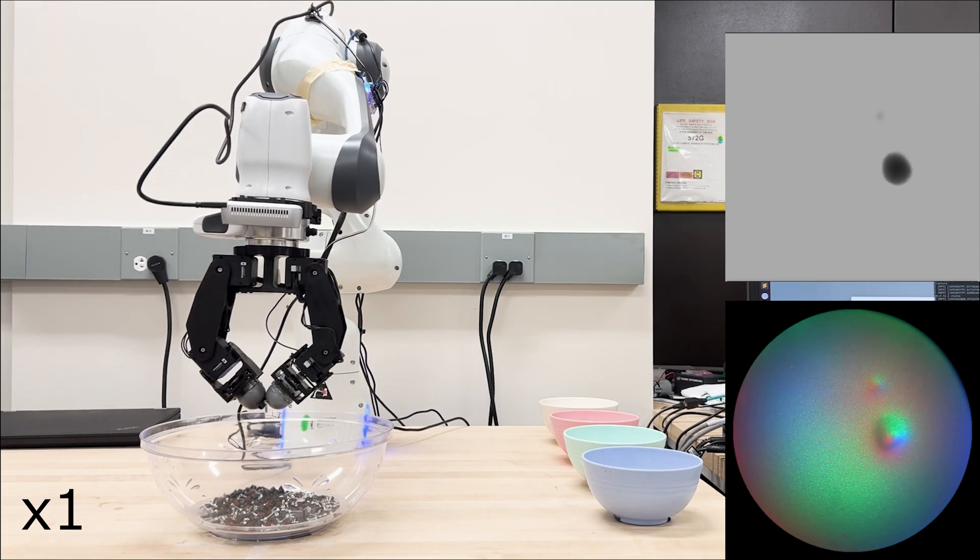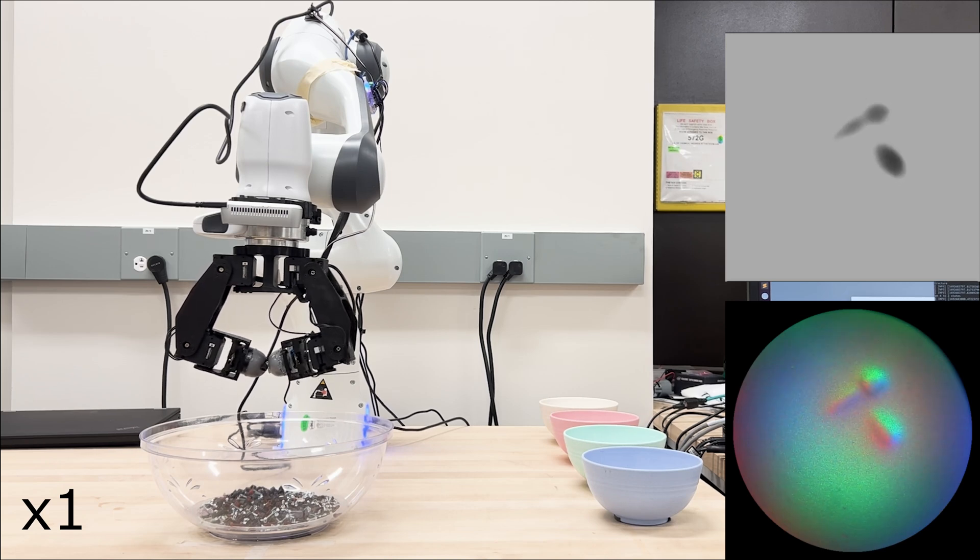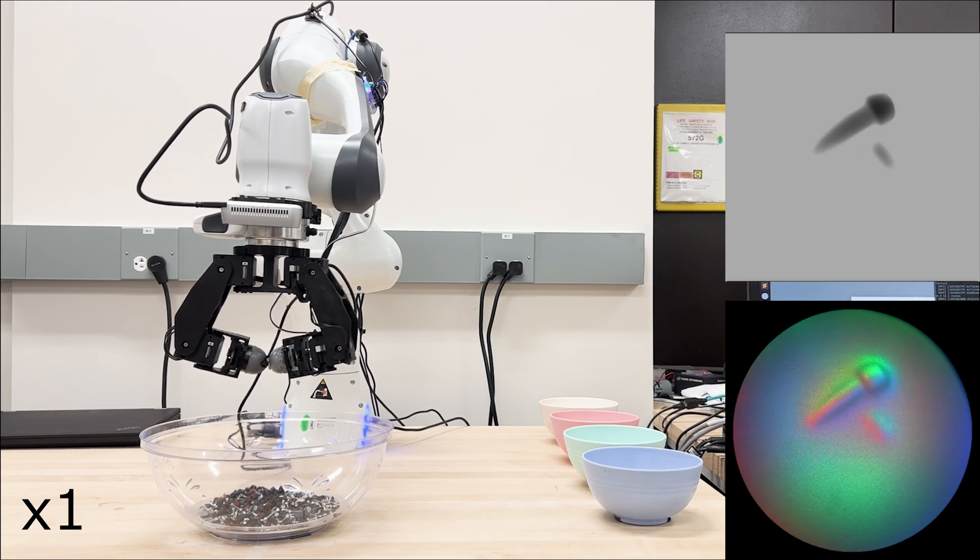Now, the gripper accidentally grasps two screws simultaneously. When it goes to classification state, it detects the two screws and detaches the object.